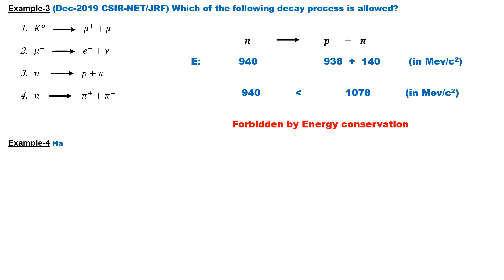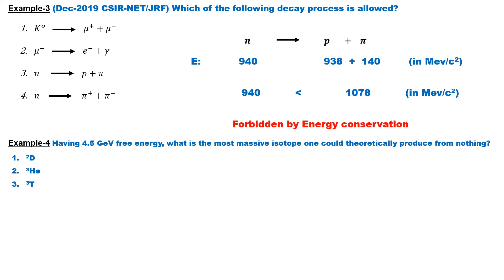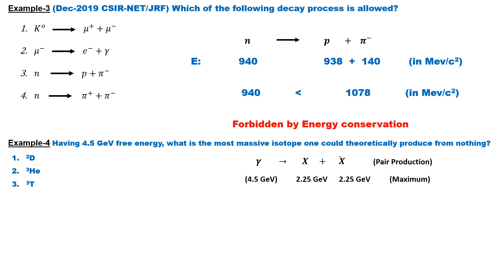Consider another example: with 4.5 GeV of free energy, what is the most massive isotope one could theoretically produce from nothing? The three options are deuteron, helium-3, and triton. The production of a particle from free energy is called pair production, which produces a particle and its antiparticle. From energy conservation, two daughter particles will be produced from 4.5 GeV, so each particle's individual mass cannot exceed 2.25 GeV — otherwise energy conservation is violated.